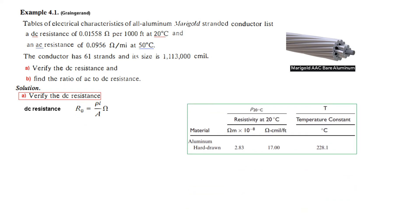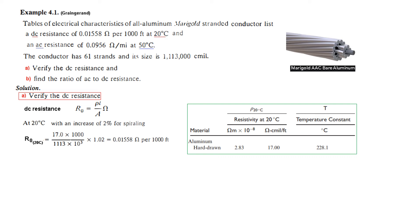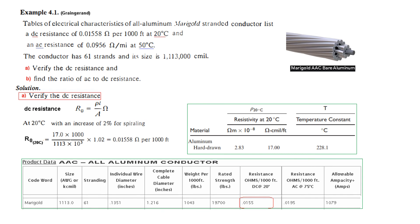From the table, rho at 20 degrees centigrade is given as 17 ohm-cmil per foot. We use L equal to 1000 feet and area equal to 1.13 times 10 to the power 3 cmil. Because of the 2% increase in length due to spiraling, we multiply by 1.02. This gives the DC resistance at 20 degrees per 1000 feet, which matches the table value.